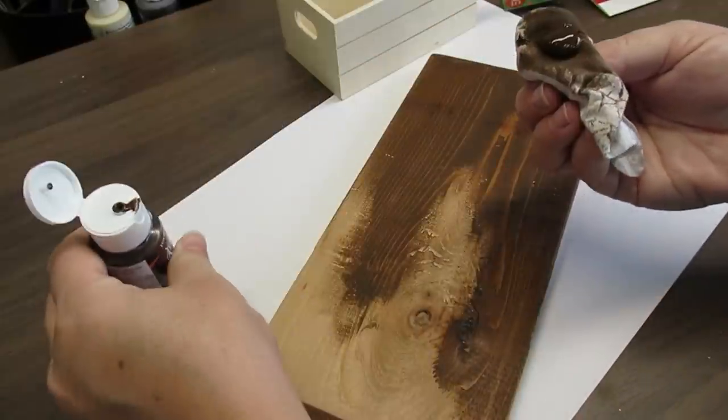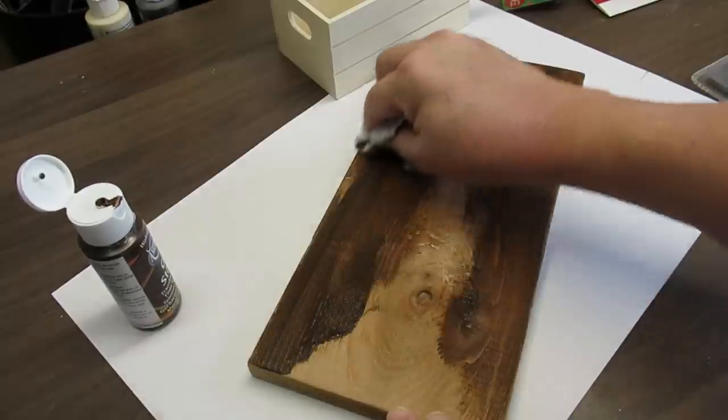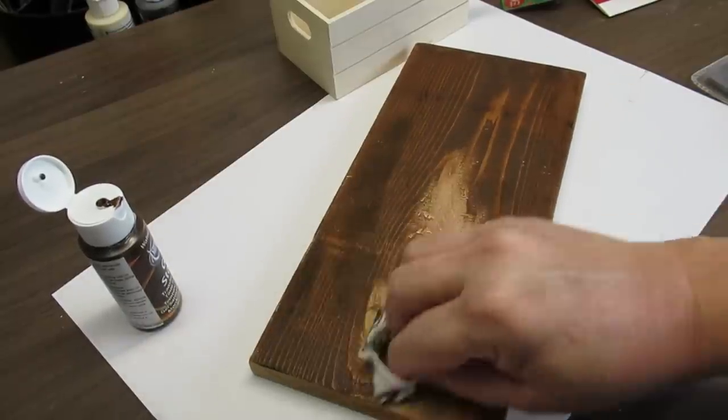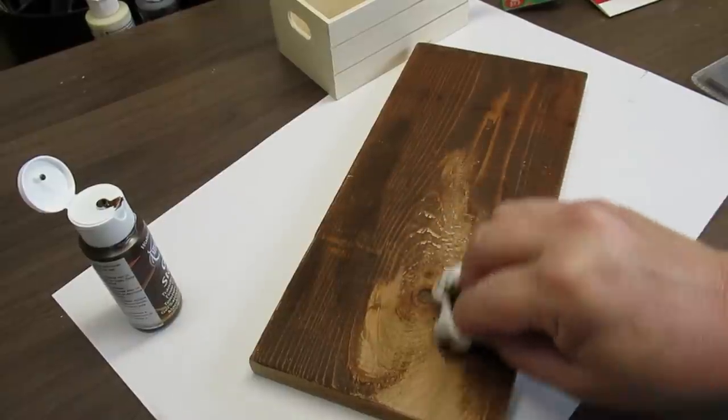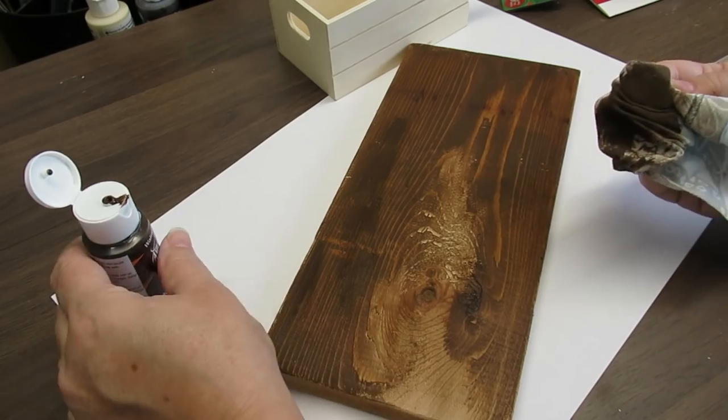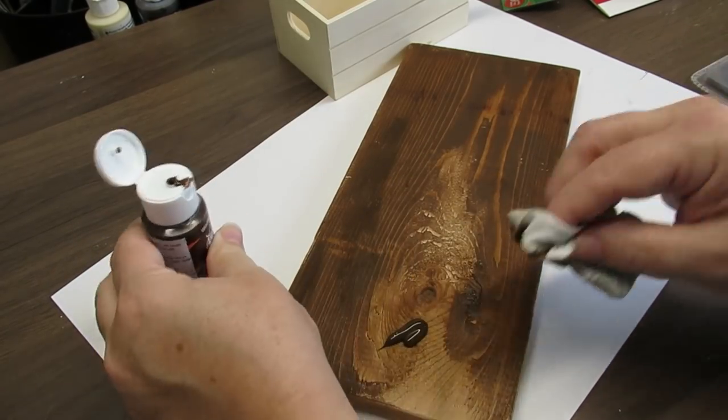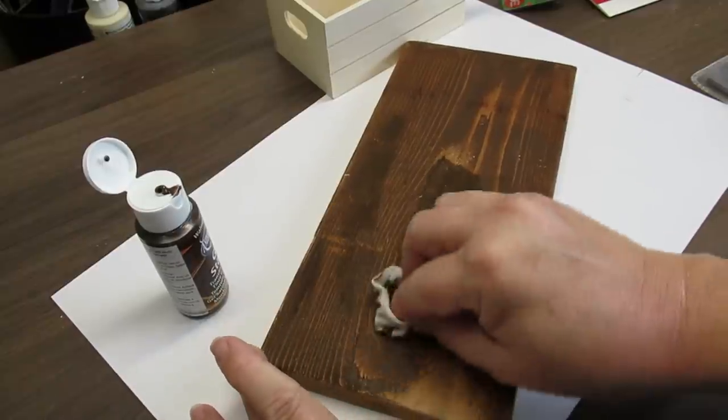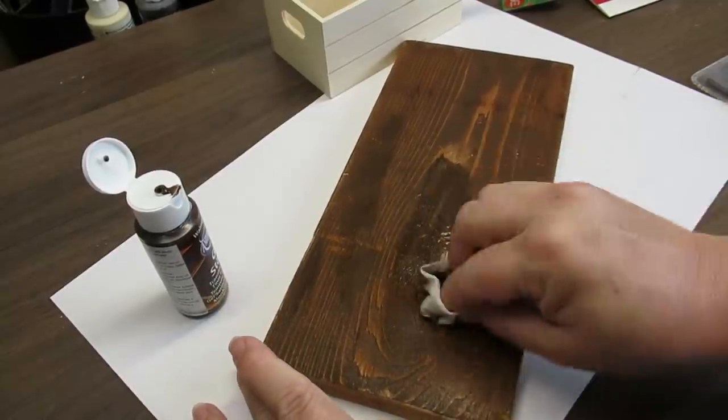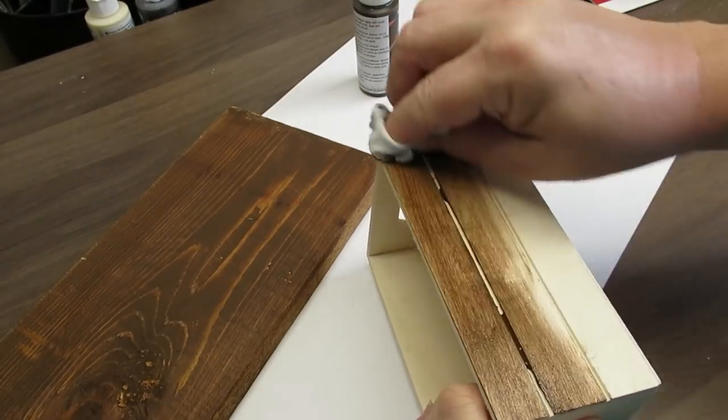I'm using a water-based gel stain in the color walnut and I'm just going with a rag right on top of this cedar plank. This is a plank that would be used for grilling fish on the barbecue, and I find these at my grocery store at the end of the season, usually on for half price. So this board actually only cost me 50 cents.